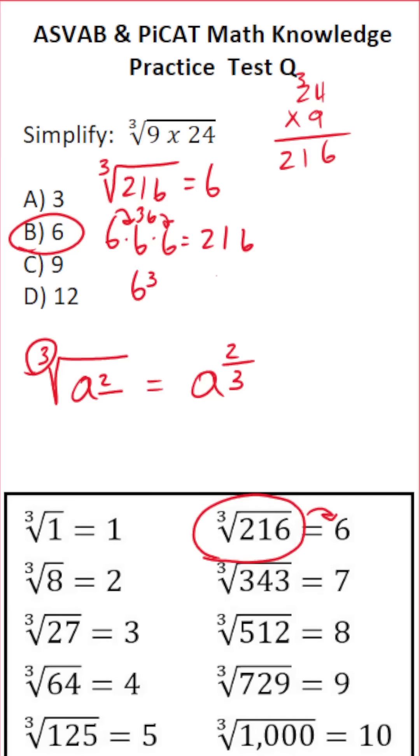So in other words, the cube root of 216 is the same thing as the cube root of 6 to the 3rd.